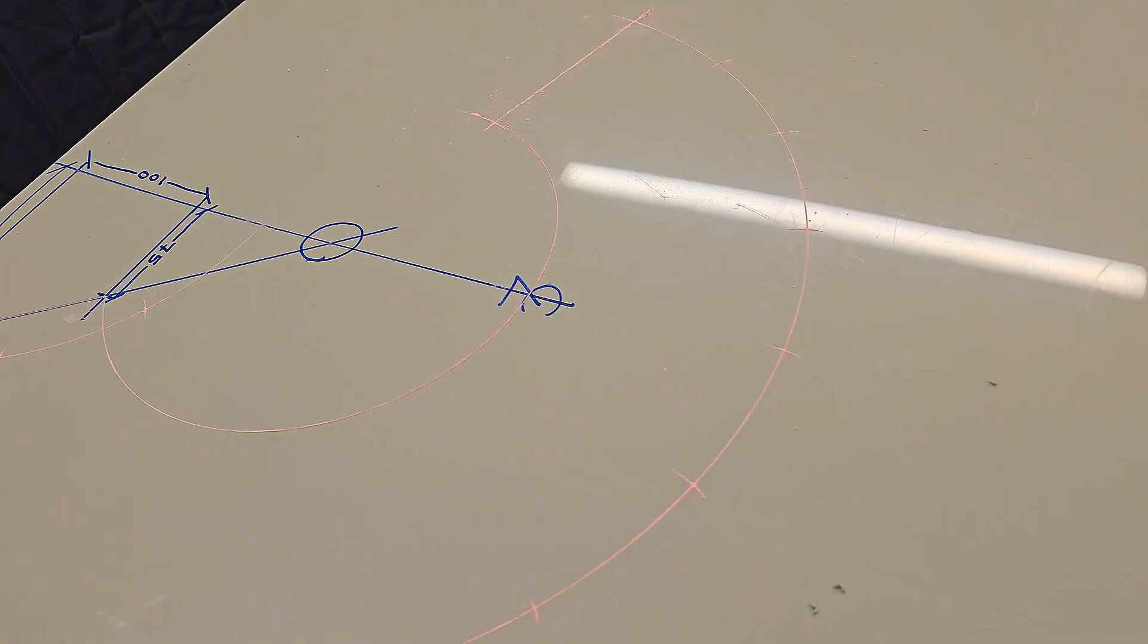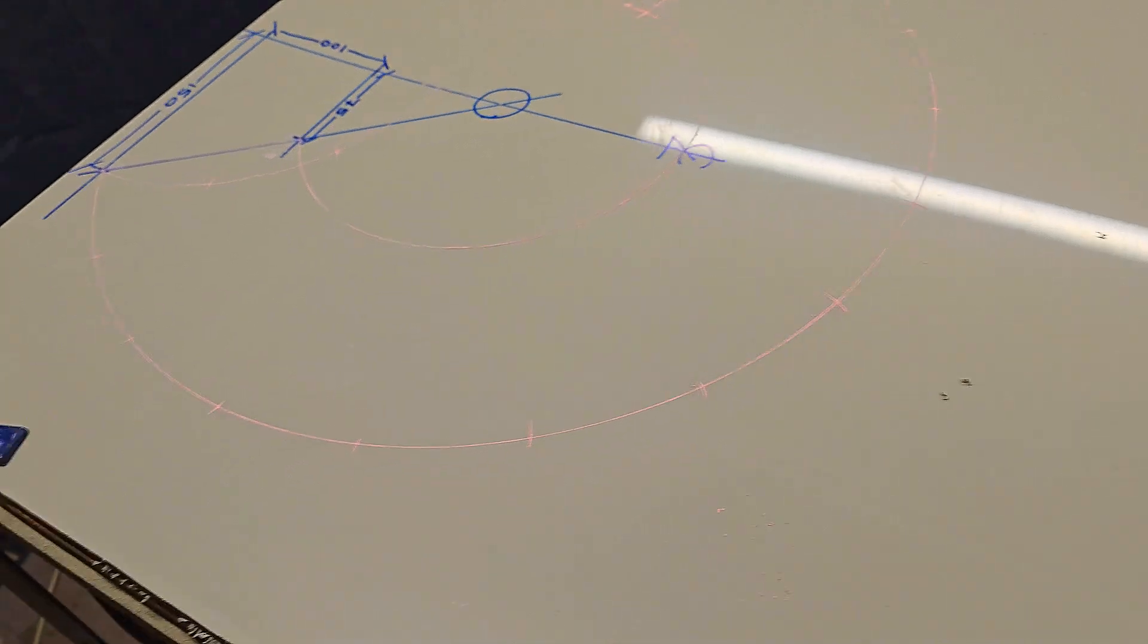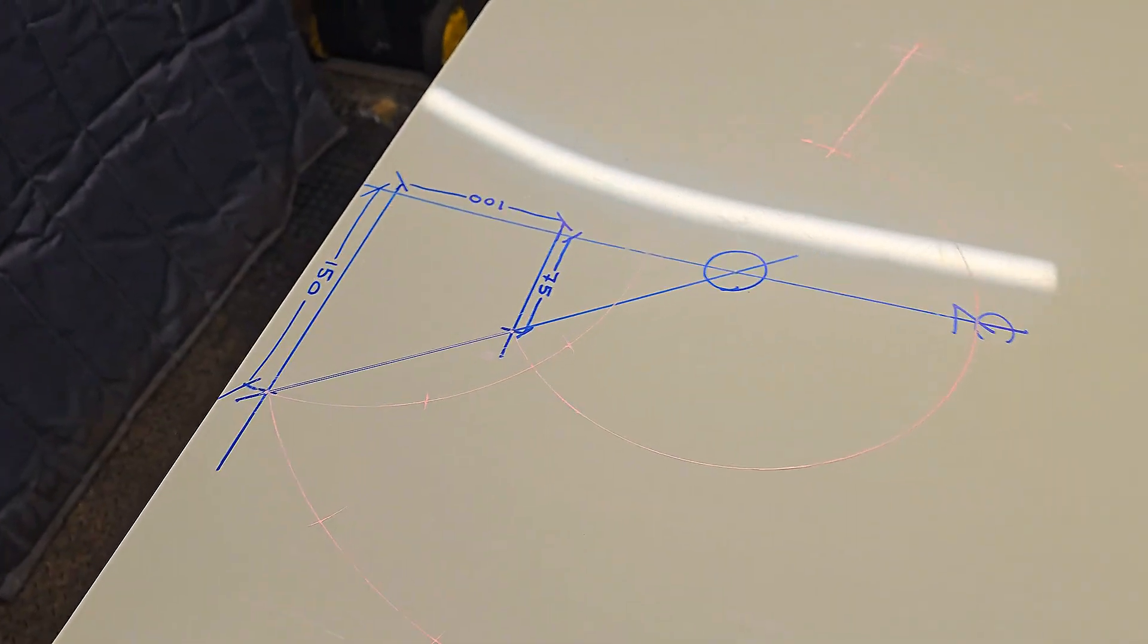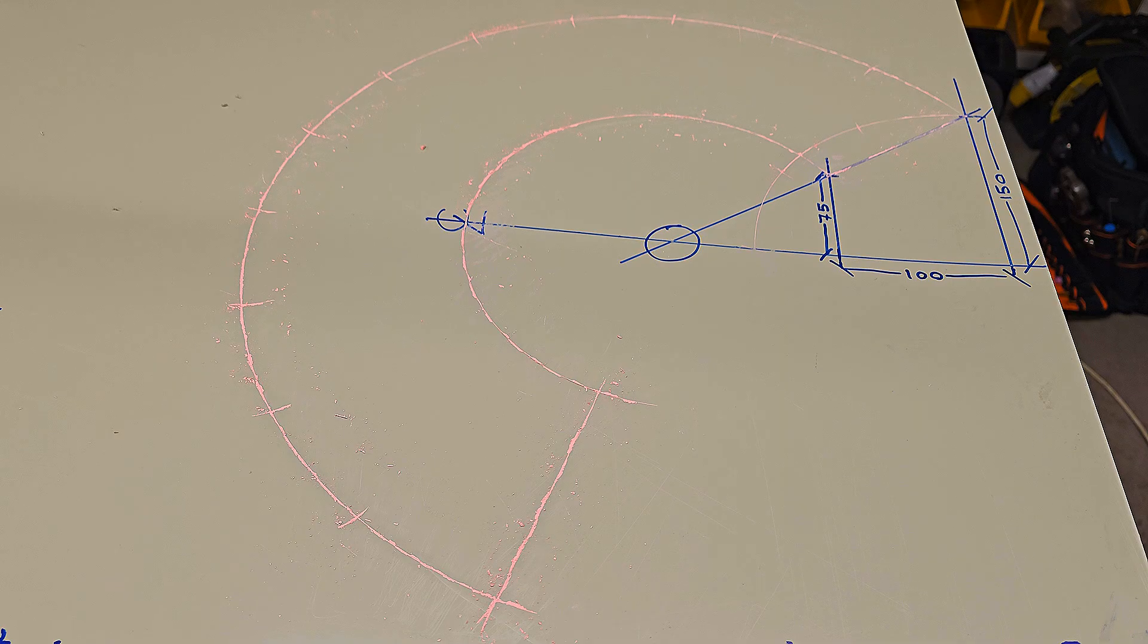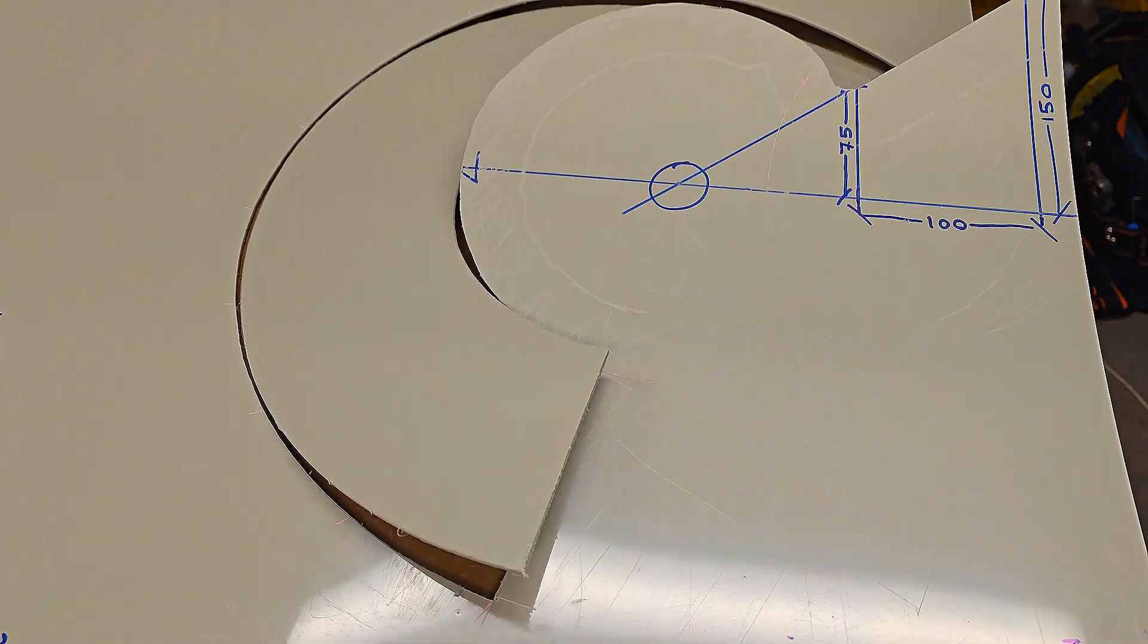So that's the cone marked. We just need to cut it out. Easy.